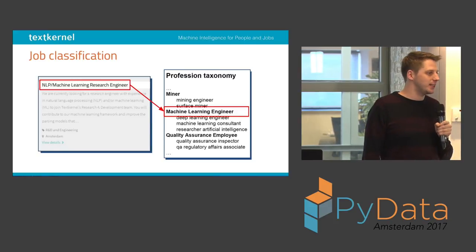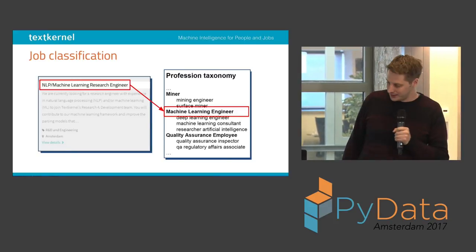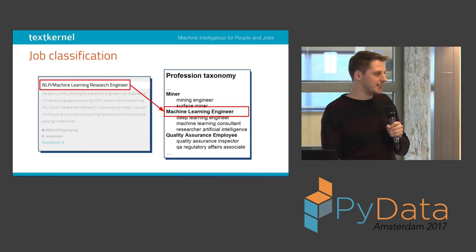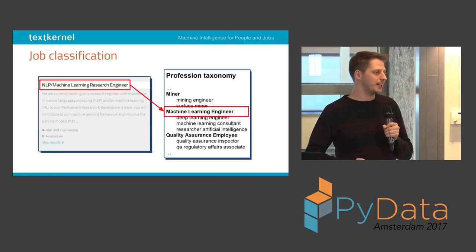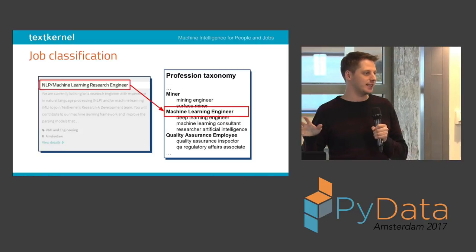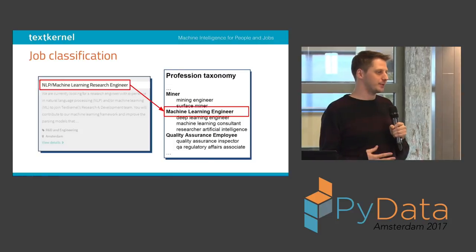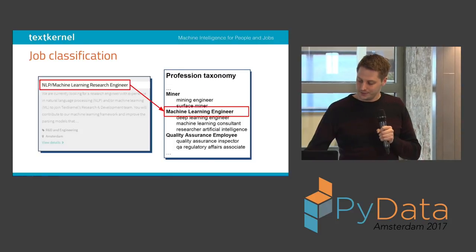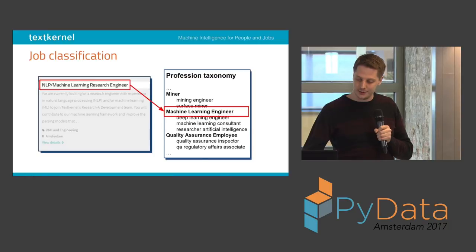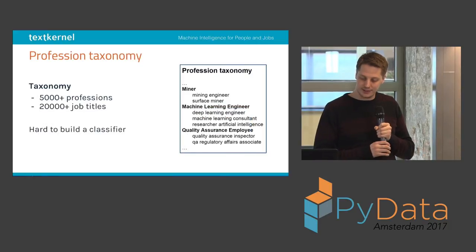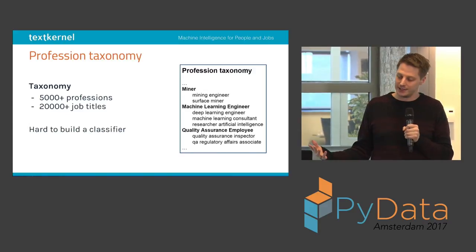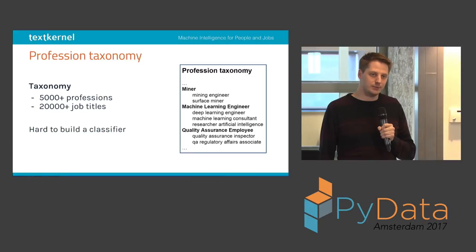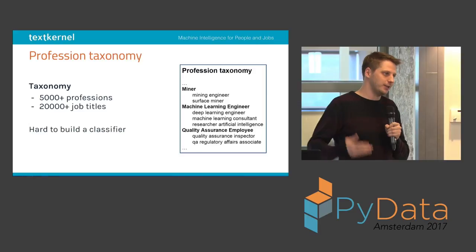It's mostly a manually curated taxonomy, which also means it doesn't have all the variation that you would see in a mined taxonomy. It only has some manually added strings, which makes the mapping problem a bit harder. This taxonomy has more than 5,000 professions and includes about 24,000 to 25,000 job titles — it changes because people are curating it.